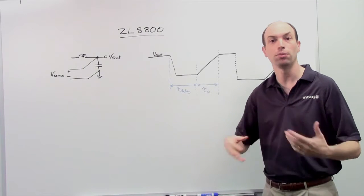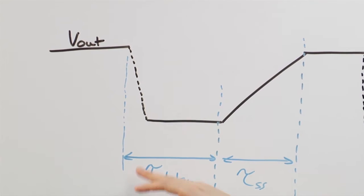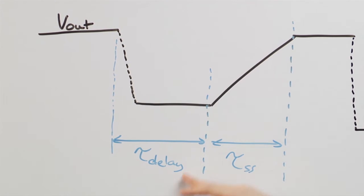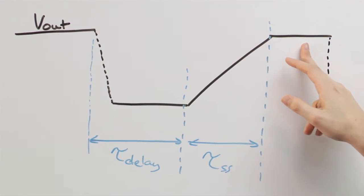Now after that point in time, it's completely configurable on where you'd like it to go. For instance, the device can stay off permanently or it can wait a fixed amount of time that's adjustable and then try to come back up through a soft start time and regulate the output voltage.